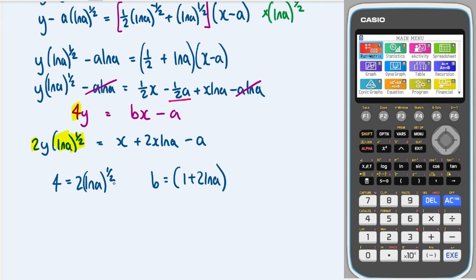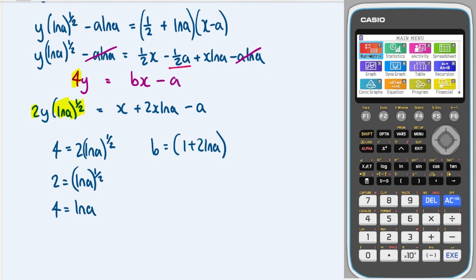Okay so we can solve these two equations to find a and b. So we can divide both sides by 2 first. And then we can square both sides. And then we can take e as the base of both sides to get a. Great and then over here we can say that b is equal to 1 plus 2 lots of ln e to the 4. So therefore b is equal to 1 plus that's 8. So b is equal to 9. And there we have it.